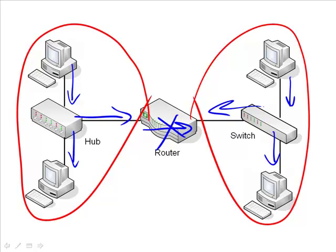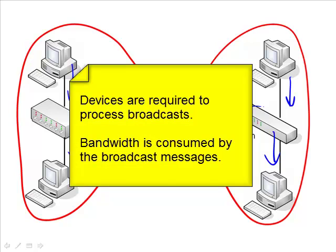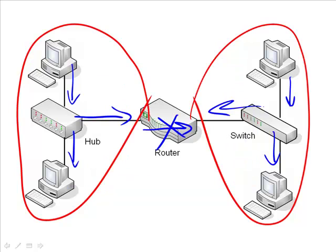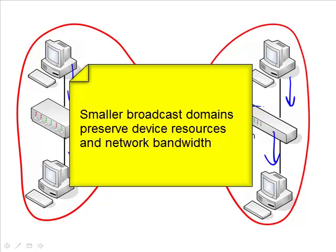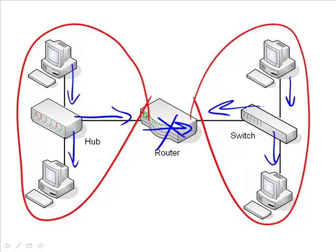When thinking about broadcast domains, consider the benefits. In each broadcast domain, every device is required to receive the broadcast message and process it, which can take up cycles on each device. If you have one giant broadcast domain and a single PC sources a broadcast message with 500 or 1,000 PCs in that domain, every single one gets a copy and has to process it — using up resources on every device and bandwidth as well. By segmenting your network into smaller broadcast domains, you get around some of those problems. It gets tricky deciding when to segment a network, but that gets more into network design considerations.